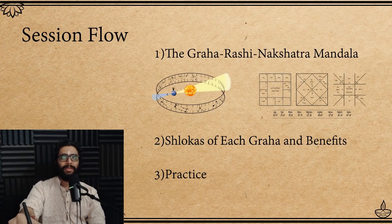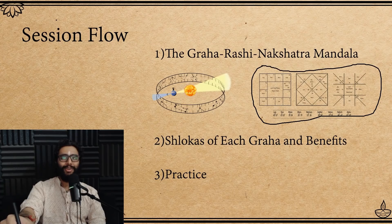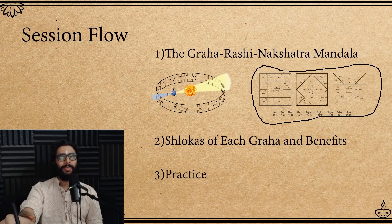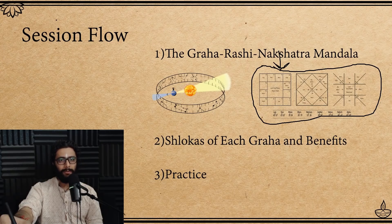Today's session flow is something like this. There are three things we will look at. First, we will look at something called the Graha, Rashi and Nakshatra Mandala. This arrangement or drawing might be something familiar to you if you have already been accustomed to the concepts of Jyotisha Shastra — or Kundali, Janma Kundali, Nakshatra Mandala, Graha Mandala as they call it. This is the pattern most commonly used by astrologers and experts of Jyotisha Shastra who want to make predictions or study the arrangement of the Grahas and their influences.